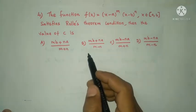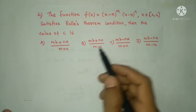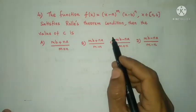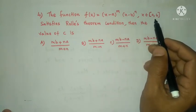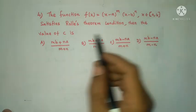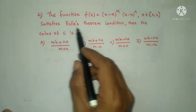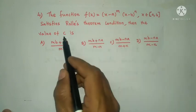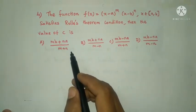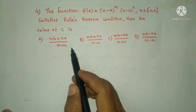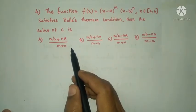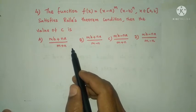For Rolle's theorem to be applicable, the three conditions must be satisfied: f is continuous on the closed interval [a, b], f is differentiable on the open interval (a, b), and f(a) = f(b). Since all conditions are satisfied, we differentiate f(x) directly, set f'(x) = 0, and solve for x to find c.